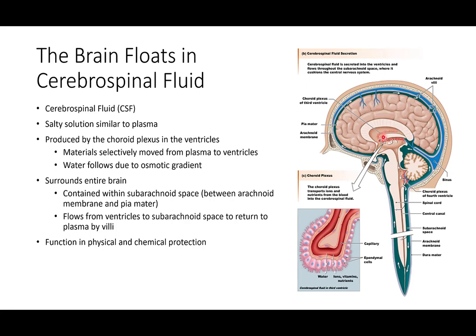Cerebrospinal fluid is produced by the choroid plexus found in the ventricles of the brain. It's secreted out of the choroid plexus, diffuses through cells into the ventricles, and then that water flows along its osmotic gradient and surrounds the entire brain. This creates a barrier of fluid, filling what we call the subarachnoid space between the arachnoid membrane and the pia mater. Their function is both physical and chemical protection for the brain.